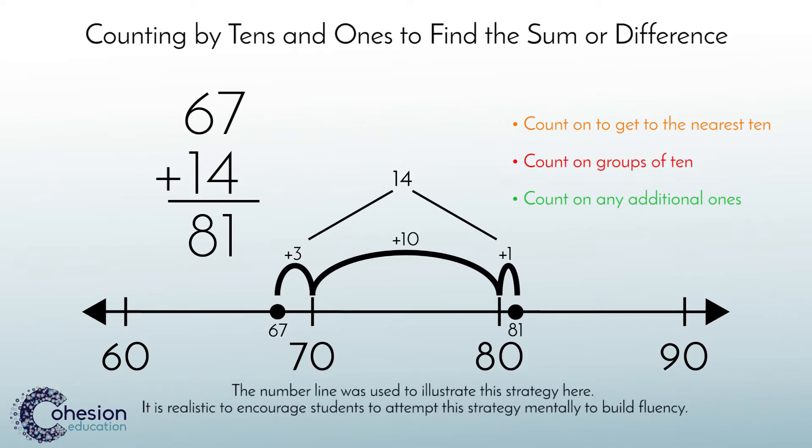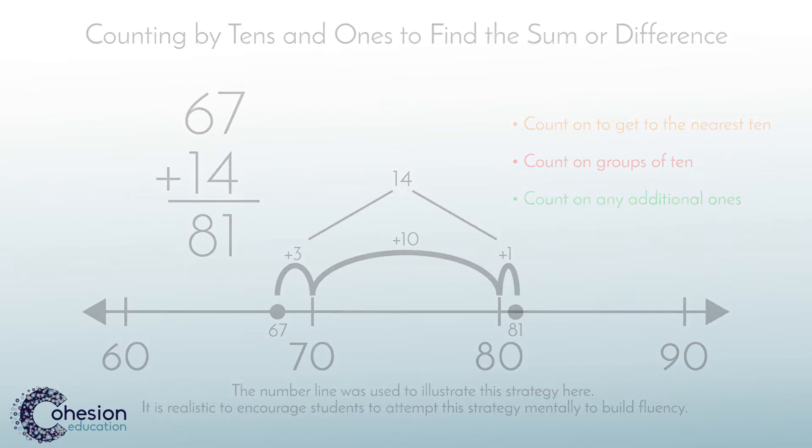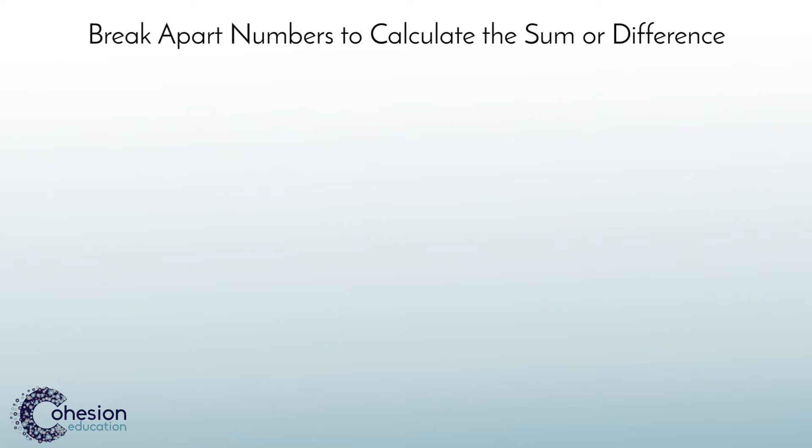Students can also use the strategy of using compatible or friendly numbers to find the sum or difference. For example, step 1, break apart the addends into compatible numbers.